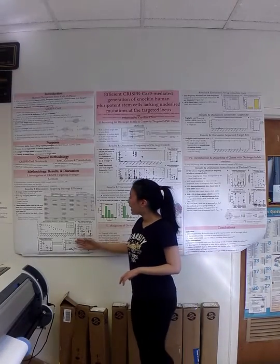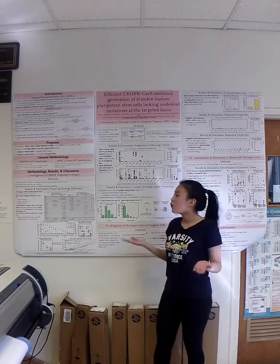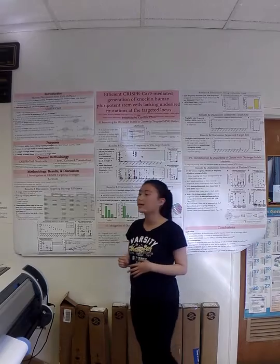Further, there was a strong correlation found between the number of correctly-targeted clones and the number of assayed clones, which was shown by the high R-squared value of up to 0.91.